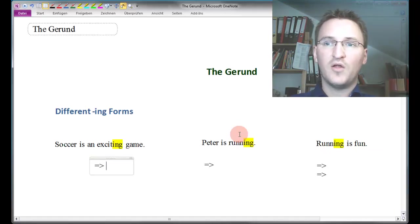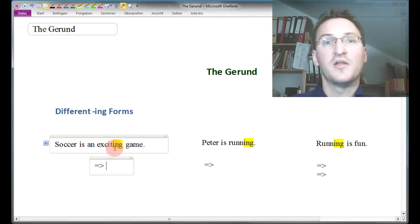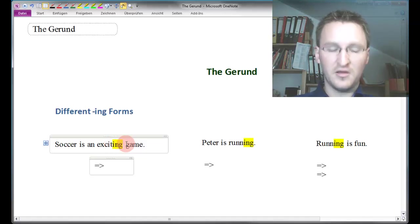However, while all these sentences look similar on the outside, after all they're all ING forms, grammatically speaking they are very different. Let's take a look at the first sentence here. Soccer is an exciting game. If we take a look at the word exciting, we might as well replace it with a word such as nice. And thus, it becomes clear that here the ING form is simply an adjective.